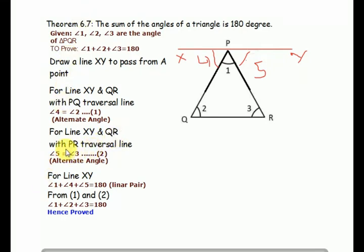For line XY and QR, PR is a traversal line. So angle 5 equals angle 3, called alternate angles. For line XY, angles 4, 1, and 5 form a linear pair, so angle 4 plus angle 1 plus angle 5 equals 180.